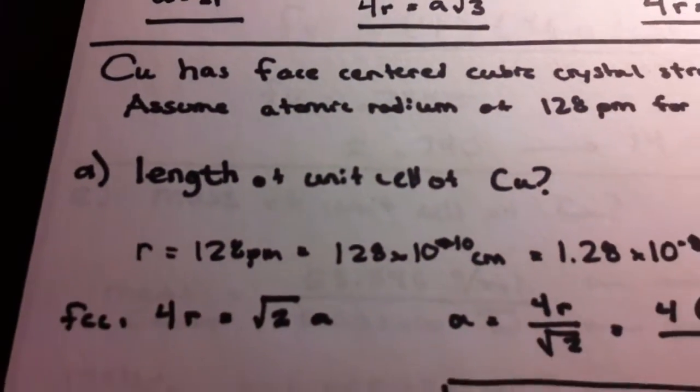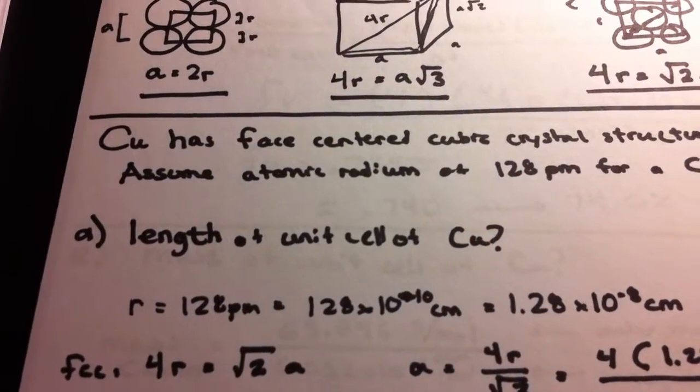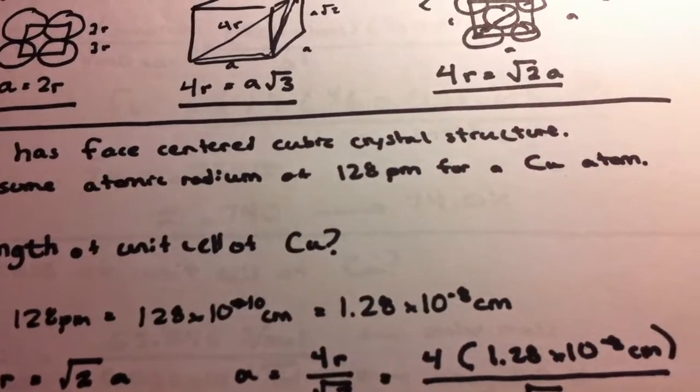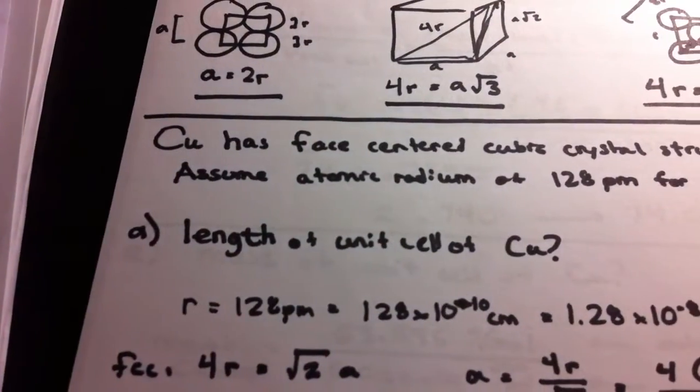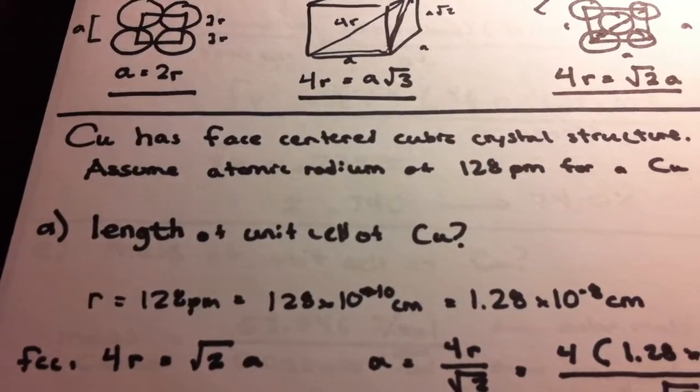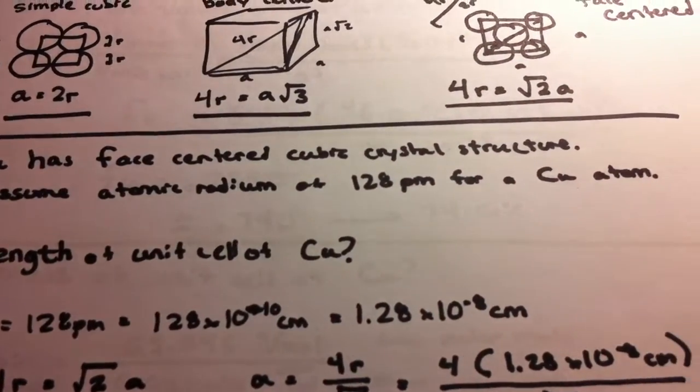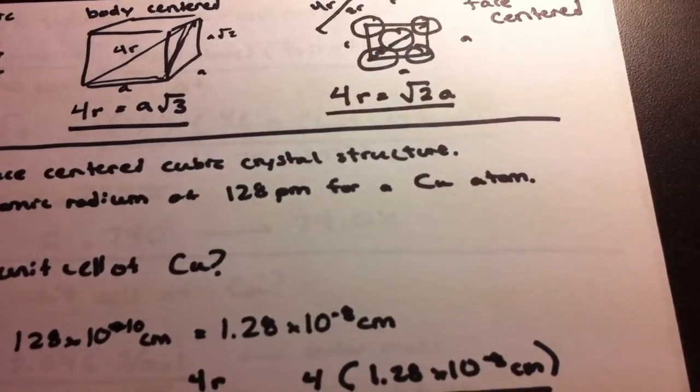Now let's start with an example problem. So copper is a face centered cubic crystal structure. Assume that it has an atomic radius of 128 picometers for a copper atom.